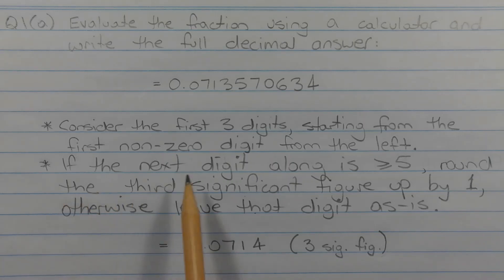If the next digit along, which is this digit here, is greater than or equal to 5, round the third significant figure, which is this digit here, up by 1. Otherwise, leave that digit as is.